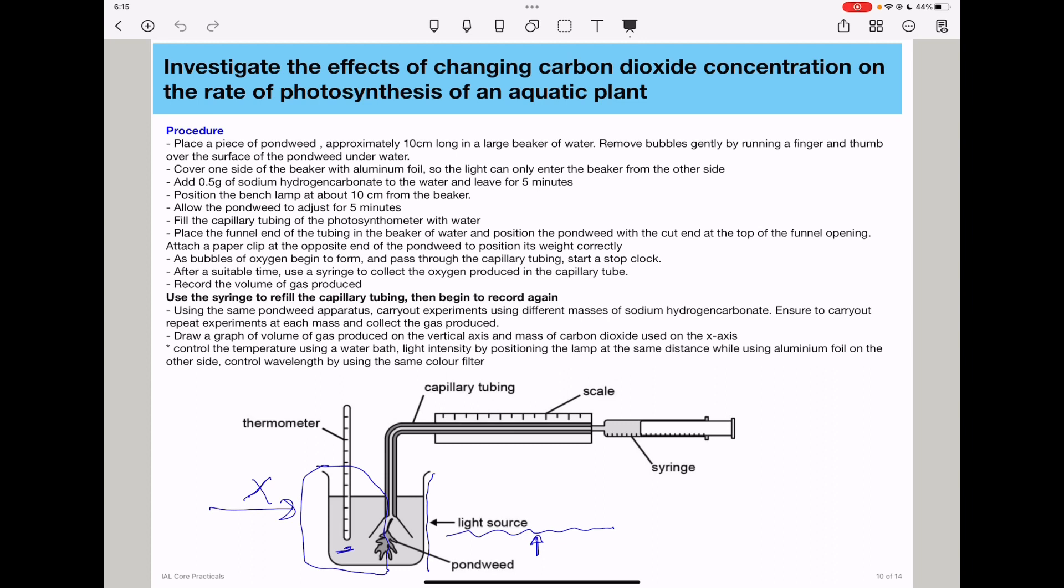Use the syringe to refill the capillary tubing and begin to record again. Using the pondweed apparatus, carry out experiments using different masses of sodium hydrogen carbonate. Carry out repeat experiments at each mass and collect the gas produced.